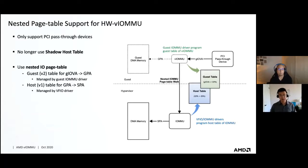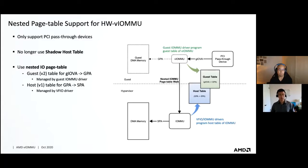I want to go back a little about nested IO page table support. This nested IO page table support is different from the shadow host page table support mentioned in the previous slides. In this new design, the guest IOMMU driver will use the V2 table — the guest table that does the translation from guest IO VA to GPA. The host IOMMU will use a host table that translates from GPA to SPA. This nested IO page table is very similar to CPU-side nested paging, and we expect this will solve some of the performance issues mentioned previously.